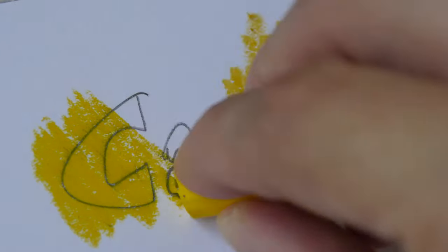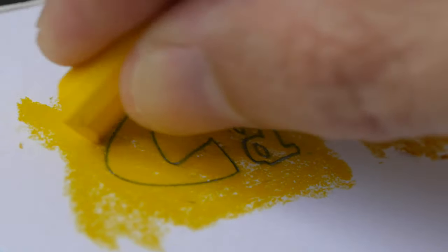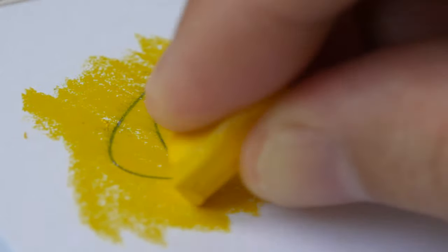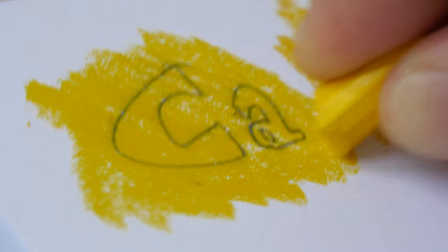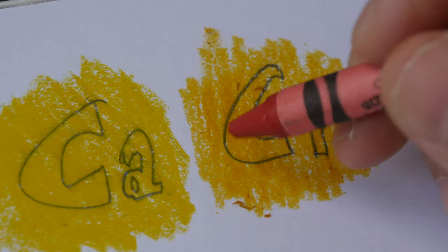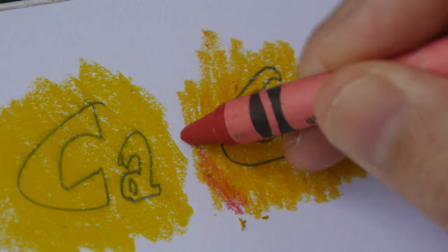Next we have Caran d'Ache, and you can see it's rather transparent as well. The nice thing about this is you don't see those physical particles coming out when you apply the crayon on paper.